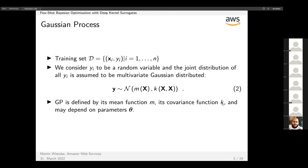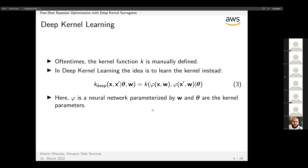The GP is defined by its mean function m, its covariance function k, and may depend on parameters θ. The kernel function is oftentimes manually chosen, like Matérn kernels or RBF ones, which are popular for parameter optimization.